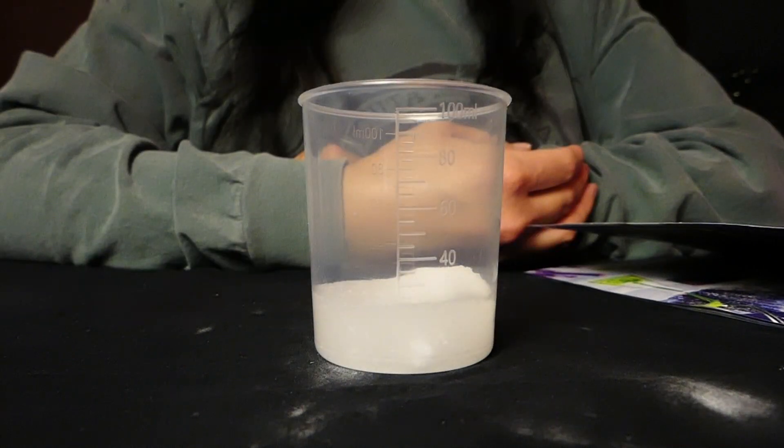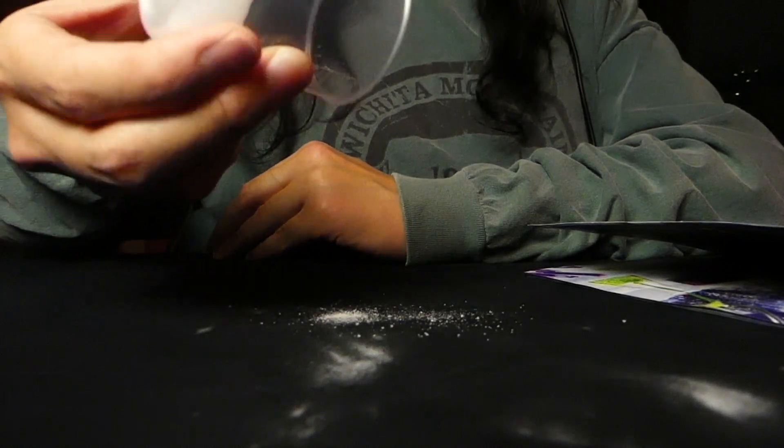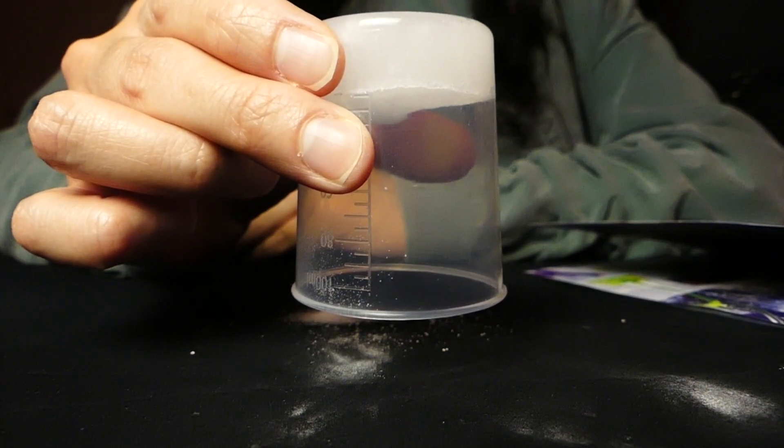Step 2, turn the measuring cup upside down after 5 seconds. The water disappears. It worked. It mostly worked. There's no water.